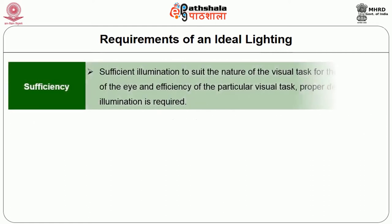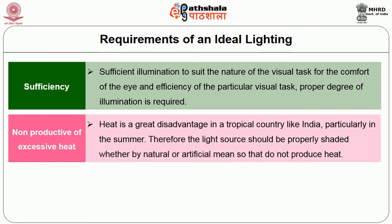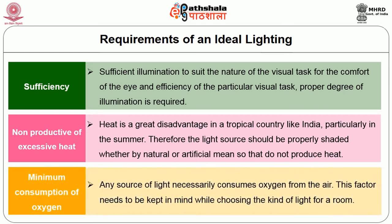Sufficiency: sufficient illumination to suit the nature of the visual task for comfort of the eye and efficiency is required. Non-productive of excessive heat: heat is a great disadvantage in a tropical country like India, particularly in summer. Therefore, the light source should be properly shaded so that it does not produce excessive heat. Minimum consumption of oxygen: any source of light necessarily consumes oxygen from the air, and this factor needs to be kept in mind while choosing the kind of light for a room.